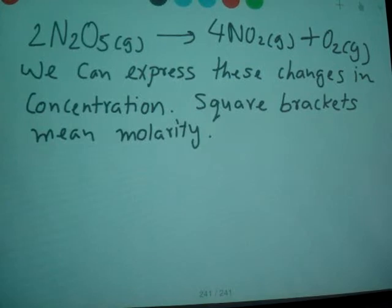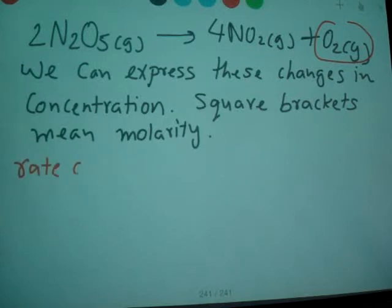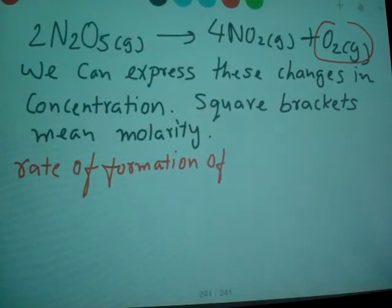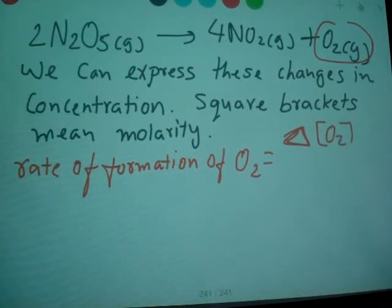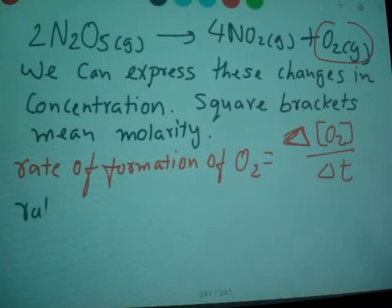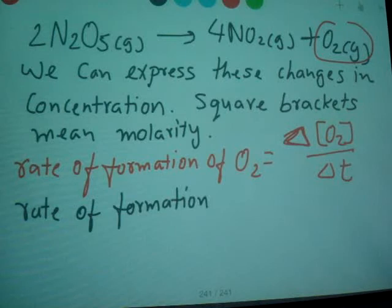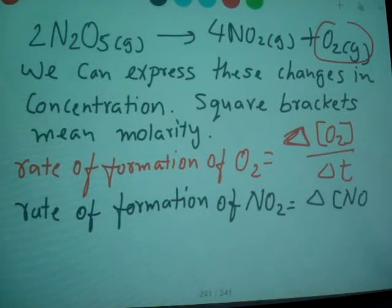When you write the rate of formation of O2, you write the change in concentration of O2 divided by delta T. When you write the rate of formation of NO2, you write delta concentration of NO2 — bracket sign indicates concentration — divided by delta T.